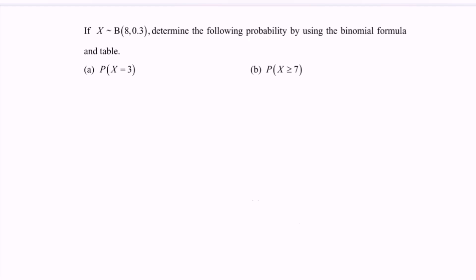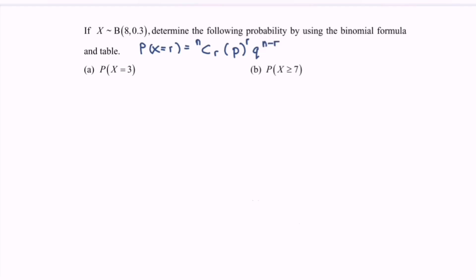First, we state the binomial formula: the probability that X equals r is equal to nCr multiplied by p to the power of r, where p is the probability of success, multiplied by (1-p) to the power of (n minus r), where (1-p) is the probability of failure. For the table method, we refer to the binomial distribution table.